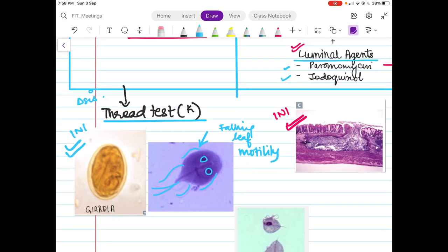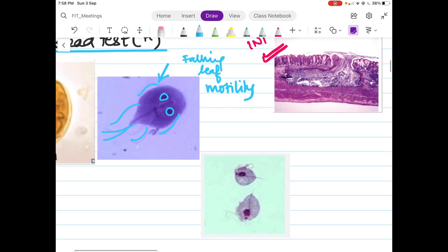You need to differentiate this with another organism which is again commonly found. Here you will see only one nucleus prominent, and you will also read the clinical features. This is Trichomonas and it causes a vaginal discharge which I will be discussing ahead at the end of my video, so stay tuned.